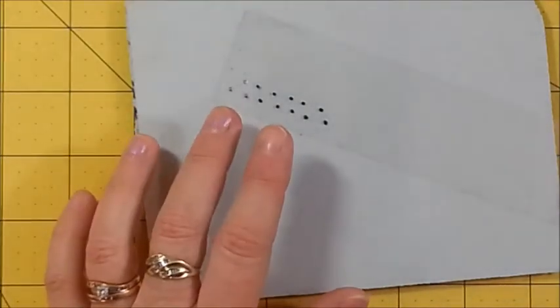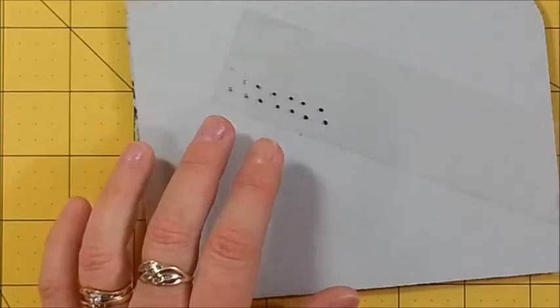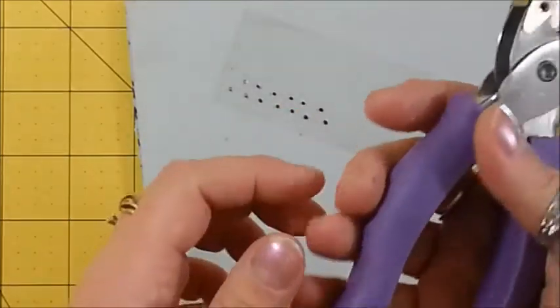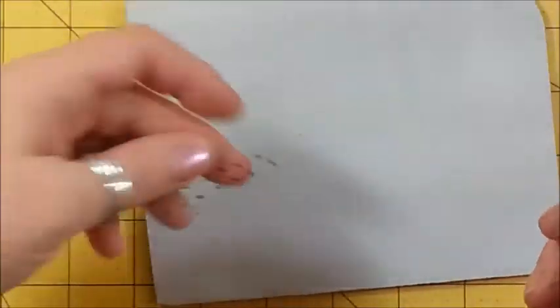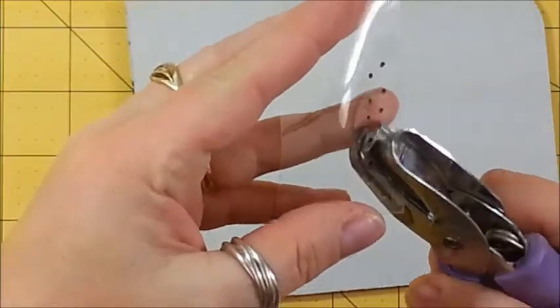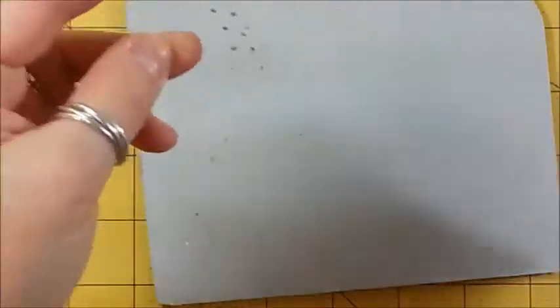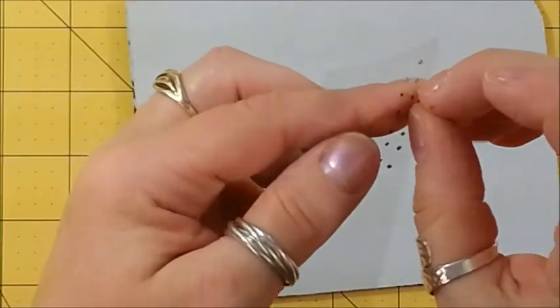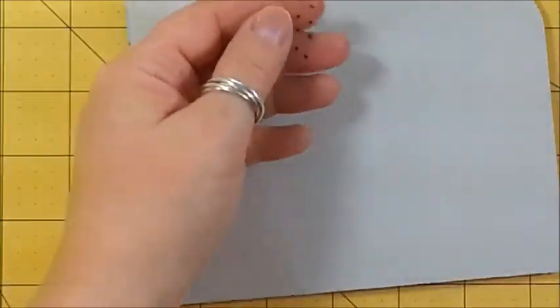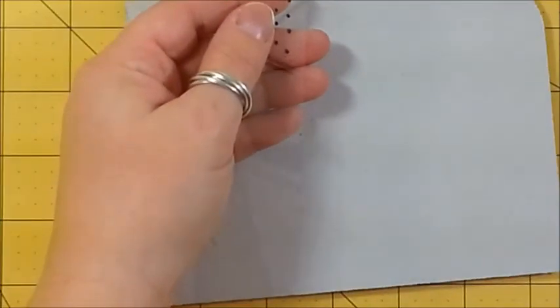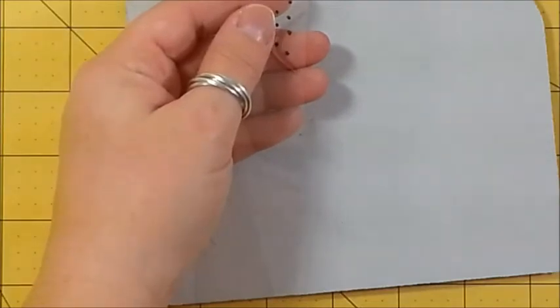I also used one of these very small hole punches. It looks like a Fiskars one. This one is 150 years old. And if you just center that dot, it'll leave a bigger hole. And then you could just take a tweezers.